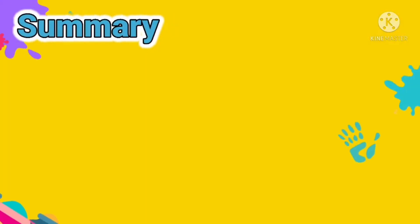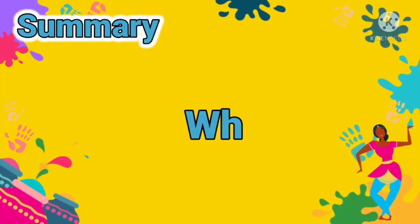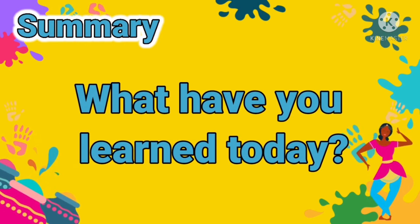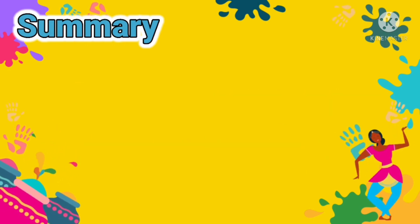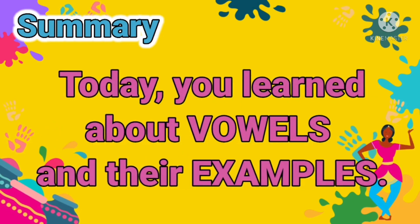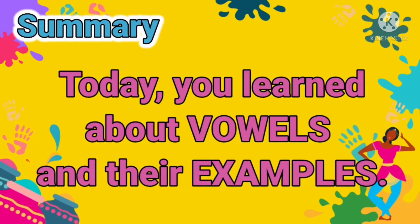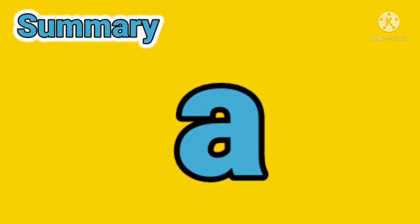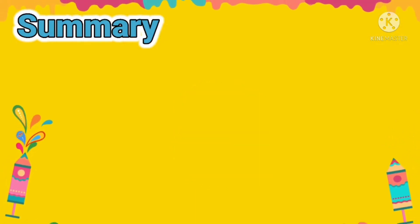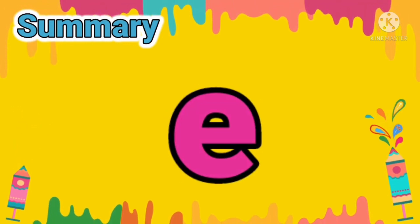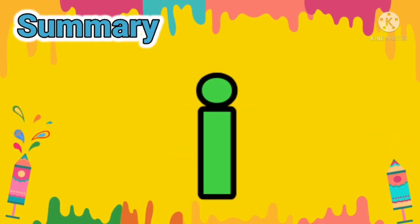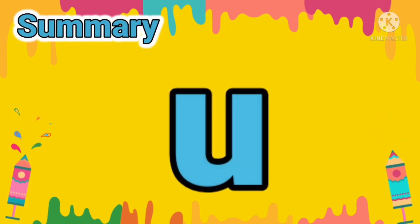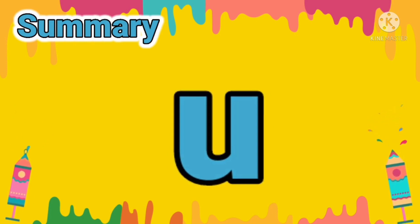Before we end, let's have the summary of the lesson. What have you learned today? You are right — today you learned about vowels and their examples. The vowels are letter A, letter E, letter I, letter O, and letter U. Good job!